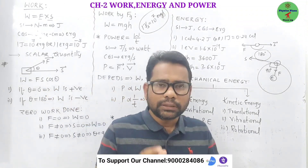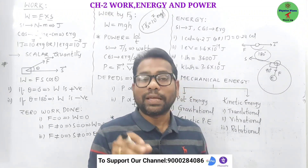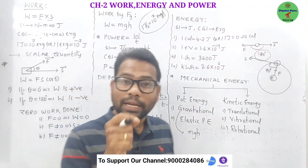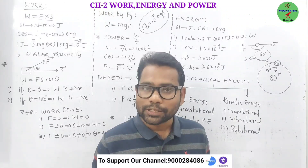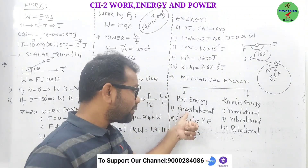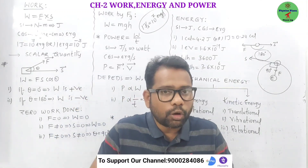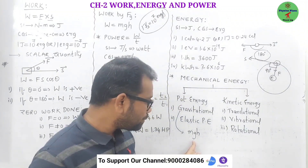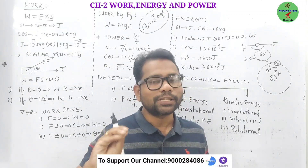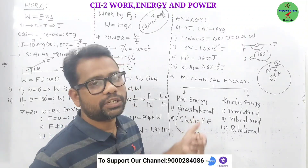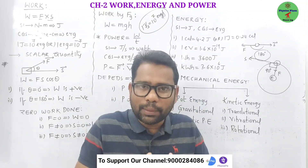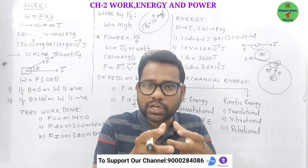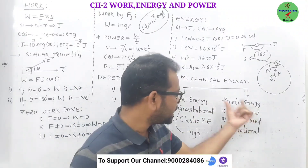Mechanical energy is the energy possessed by an object by virtue of its state of rest or state of motion, and it is of two types: potential energy and kinetic energy. Potential energy is the energy possessed by an object by virtue of its position or configuration. It is of two types: gravitational potential energy, which is measured by the formula mgh — at infinity, gravitational potential energy is zero — and elastic potential energy, which is the energy gained by a body due to deformation.